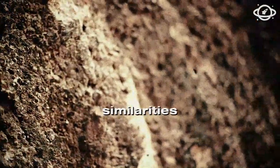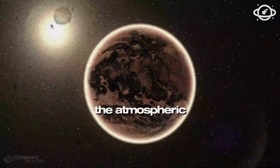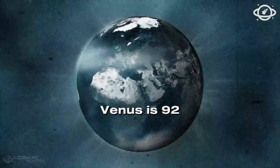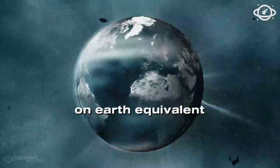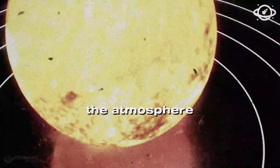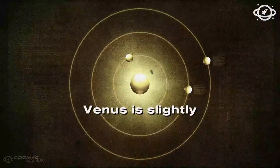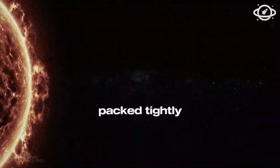But that's where the similarities end. Venus' surface is an extreme environment. The atmospheric pressure on Venus is 92 times greater than on Earth, equivalent to being one kilometer underwater on Earth. The atmosphere is 93 times denser than ours, and since Venus is slightly smaller than Earth, this gas is packed tightly.